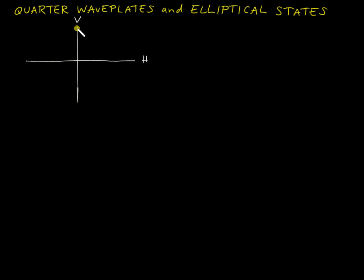Here's our horizontal and vertical axes that we've got here, and we're going to look at a general state that makes some angle with the horizontal axis, and we'll call that angle alpha.